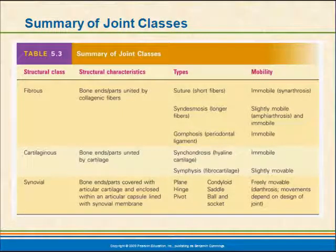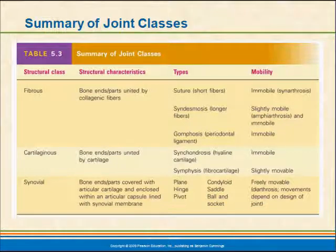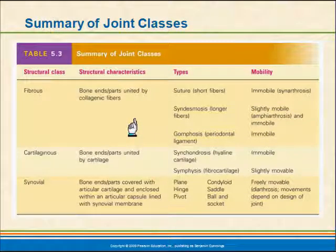There is a table in your textbook, Table 5-3, which gives a summary of joint classes. One interesting structural classification is the gomphosis, which is the periodontal ligament. While it is classified as immovable, the gomphosis — the thing that holds your tooth in the socket — does allow a slight amount of movement. When we bite down, our teeth can give just a little. Stretch receptors in that ligament trigger a reflex causing us to open our jaw quickly if we bite on something too hard, preventing broken teeth.